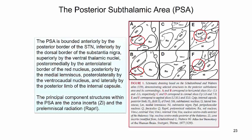The posterior subthalamic area is located between the red nucleus and the posterior tail of the STN. It is bounded anteriorly by the posterior border of the STN, inferiorly by the dorsal border of the substantia nigra, superiorly by the ventral thalamic nuclei, posteromedially by the anterolateral border of the red nucleus, posteriorly by the medial lemniscus, posterolaterally by the ventral nucleus anterior caudal nucleus, and laterally by the posterior limb of the internal capsule.